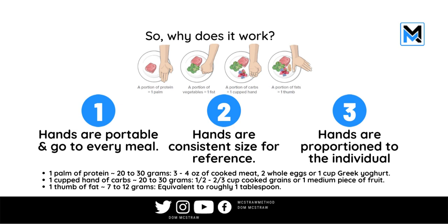So why does it work? Hands are portable — they go with you to every meal. They are a consistent size for your reference, and they're proportional to the individual. If you're a taller individual, your hands are generally proportionate larger; smaller person, smaller hands. For example, roughly a palm of protein is about 20 to 30 grams — about three to four ounces of cooked meat, two whole eggs, or a cup of Greek yogurt. A cupped hand of carbs is also about 20 to 30 grams — about half to two-thirds of a cup of cooked grains or a medium piece of fruit. A thumb of fat is 7 to 12 grams — roughly a tablespoon.